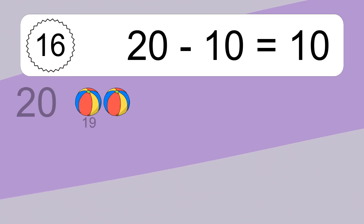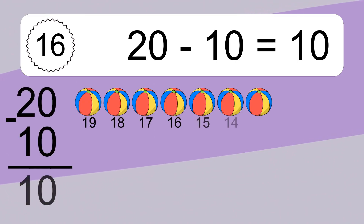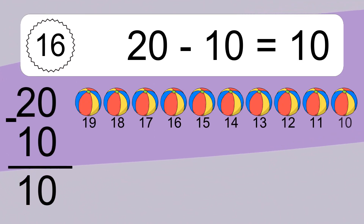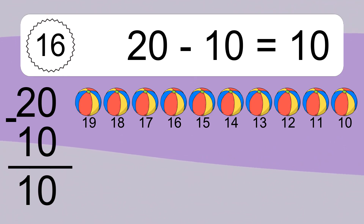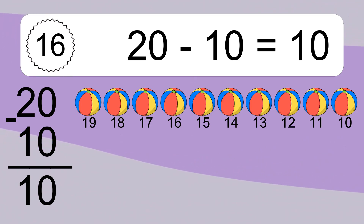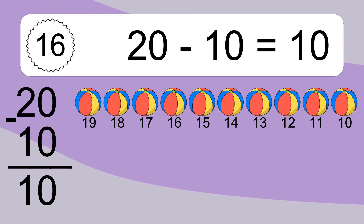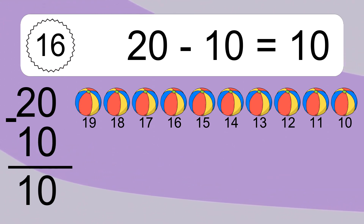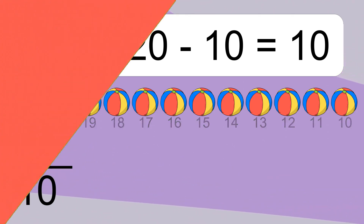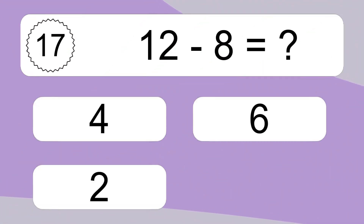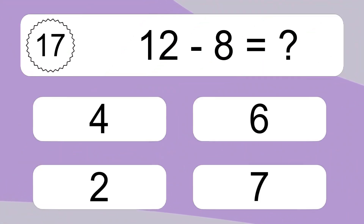20 minus 10 equals 10. Let's count it. 19, 18, 17, 16, 15, 14, 13, 12, 11, 10. 12 minus 8 equals what?